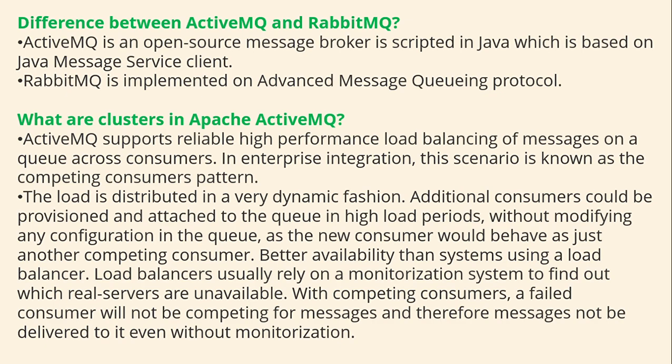What are clusters in Apache ActiveMQ? ActiveMQ supports reliable, high-performance load balancing of messages on a queue across consumers. In enterprise integration, this is known as the competing consumer pattern. The load is distributed dynamically — additional consumers can be provisioned and attached to the queue during high-load periods without modifying any configuration, as each new consumer simply becomes another competing consumer. This provides better availability than systems using a load balancer, since a failed consumer simply stops competing for messages without needing a monitoring system to detect it.